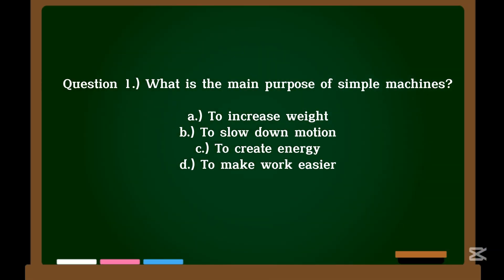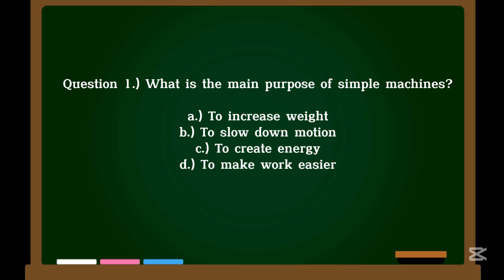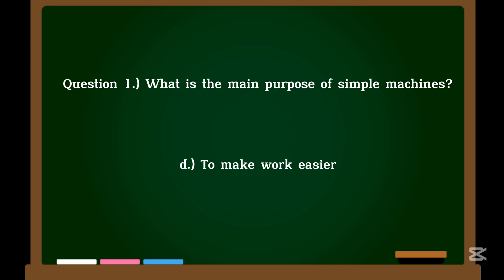Question 1. What is the main purpose of simple machines? A. To increase weight. B. To slow down motion. C. To create energy. D. To make work easier. Correct answer: D. To make work easier.